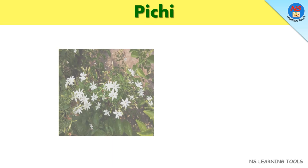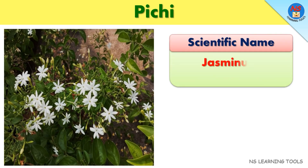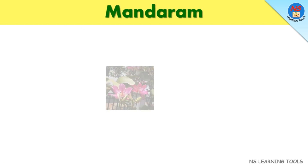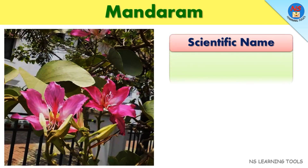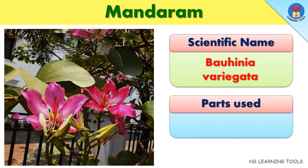Pitchi. Scientific name: Jasminum grandiflarum. Parts used: Leaf. Mandaram. Scientific name: Valhenia variegata. Parts used: Bark, root.